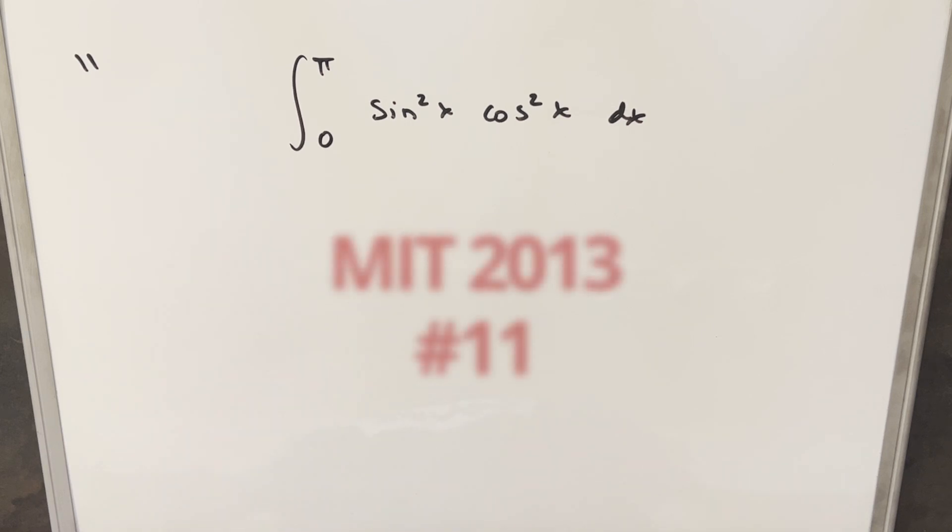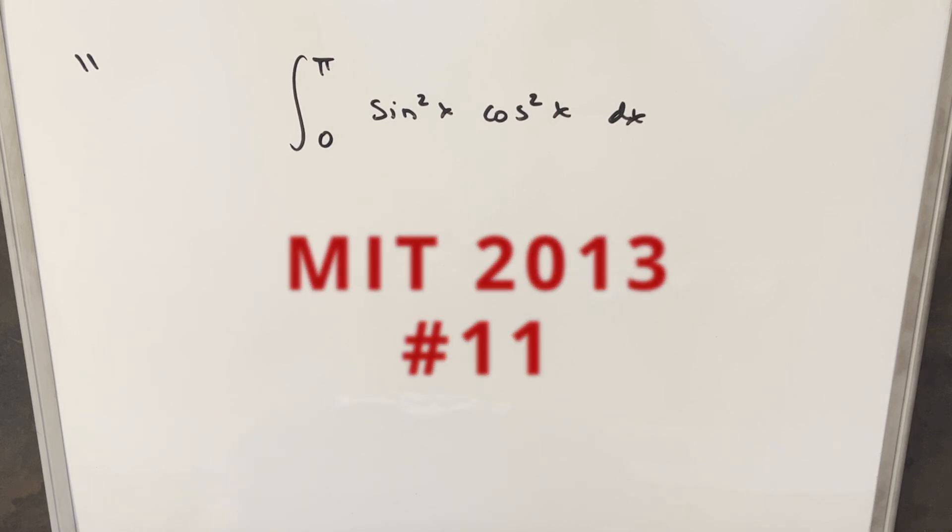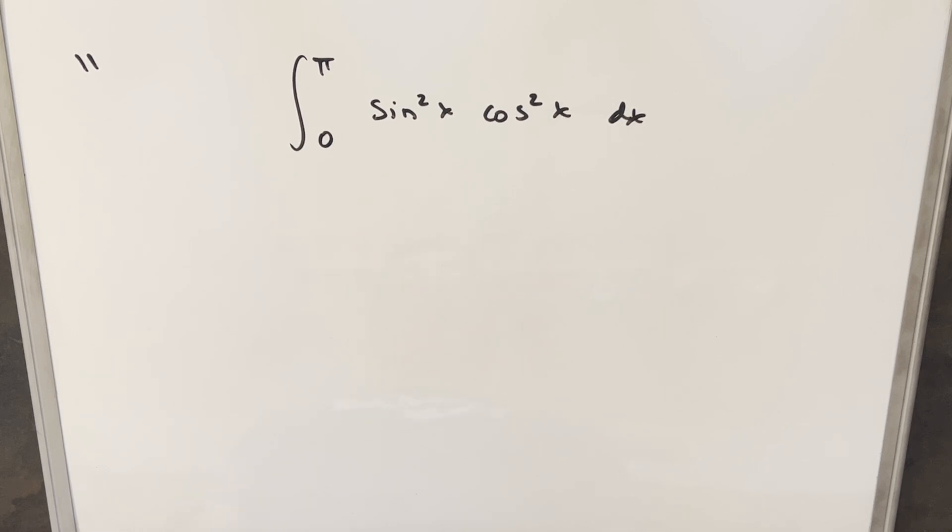Okay, we have here another integral from the MIT Integration B 2013, problem 11. We have the integral from 0 to pi of sine squared x cosine squared x dx.